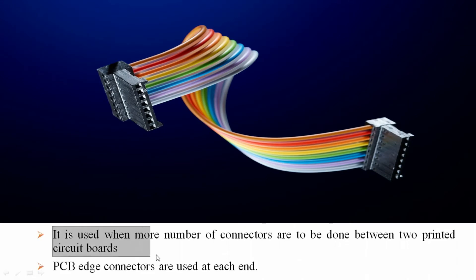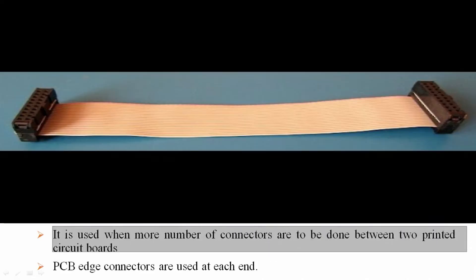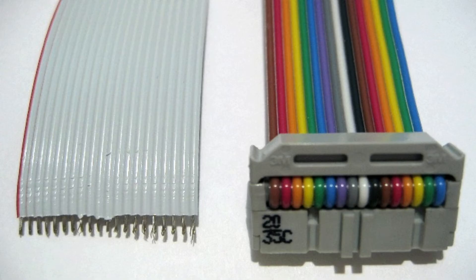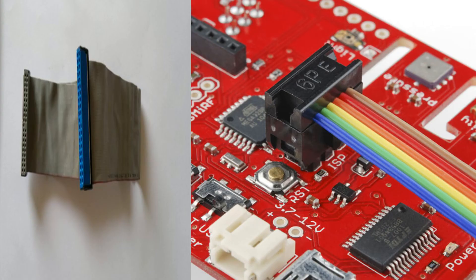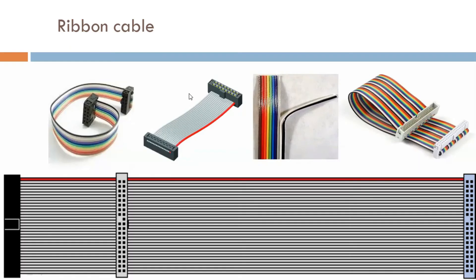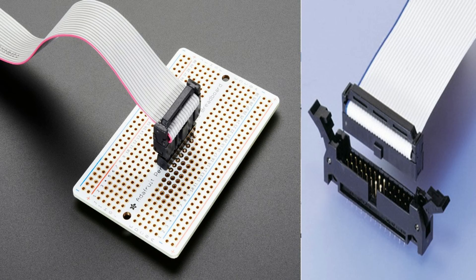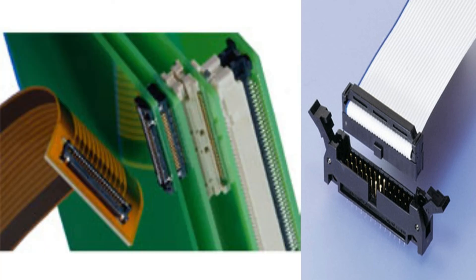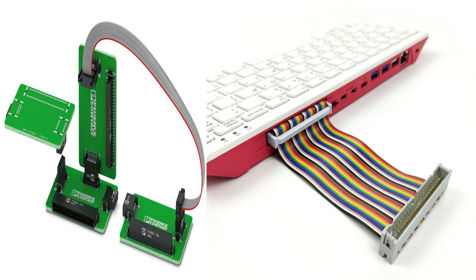It is used when more number of connections are to be done between two printed circuit boards. One PCB, or printed circuit board, will be connected using the Ribbon Cable. PCB edge connectors are used at each end, so the PCB edges are connected to each other.